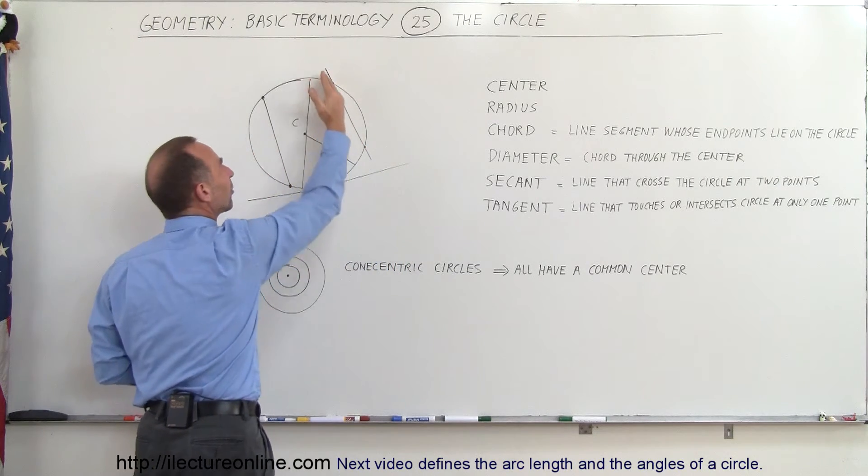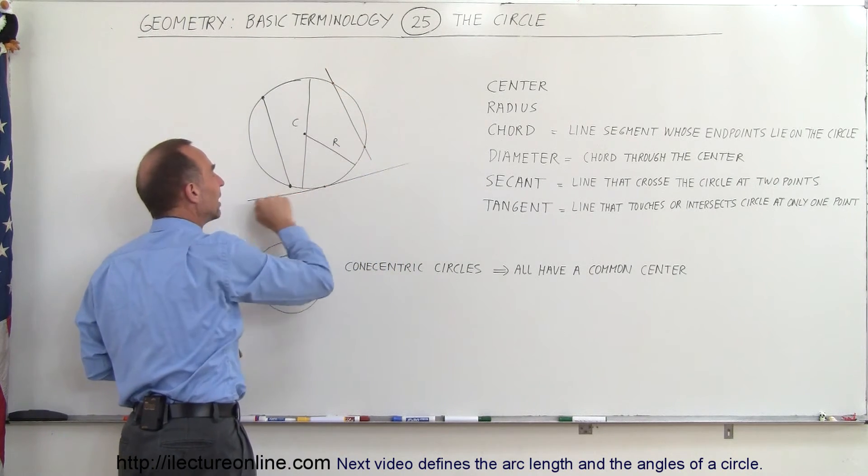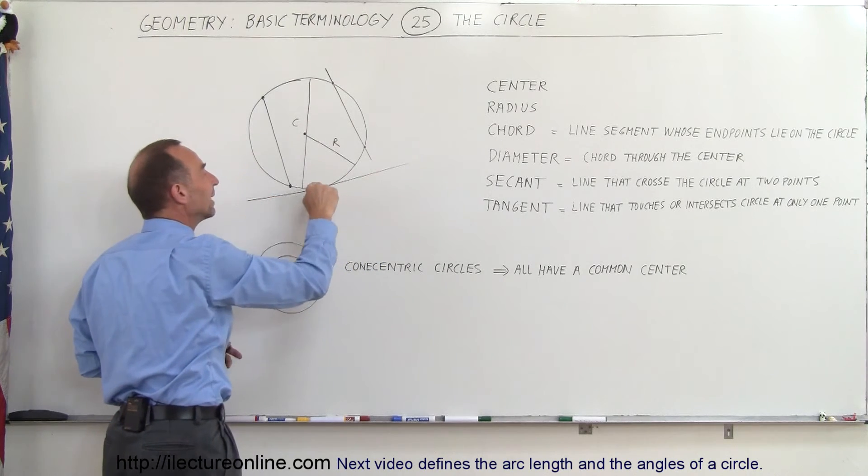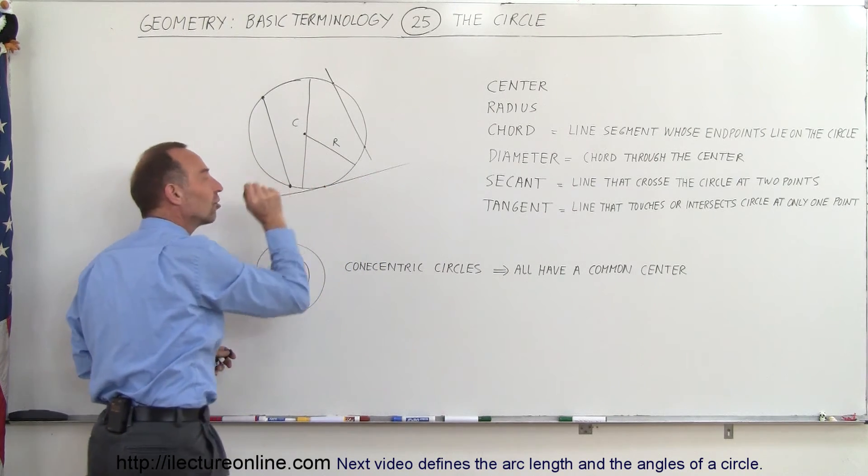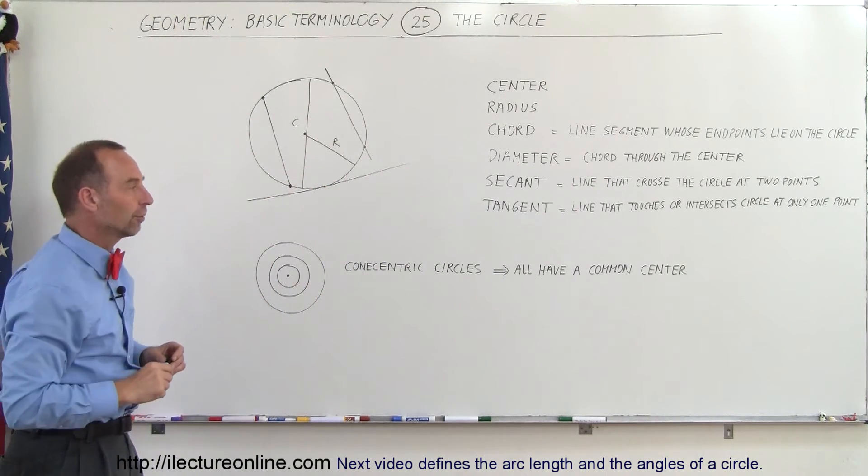Here's an example of a secant line where it crosses a circle in two places. Here's an example of a tangent line where it intersects or just touches the circle at a single point.